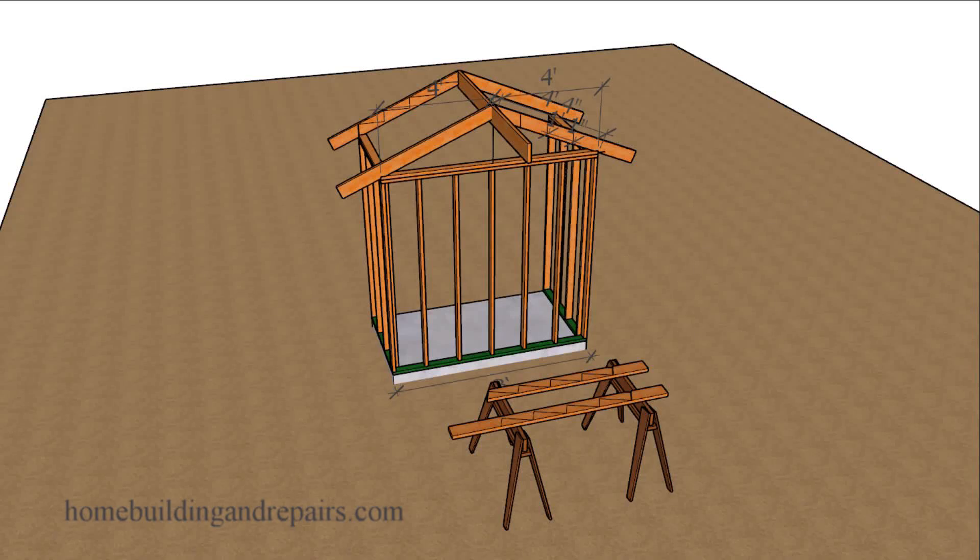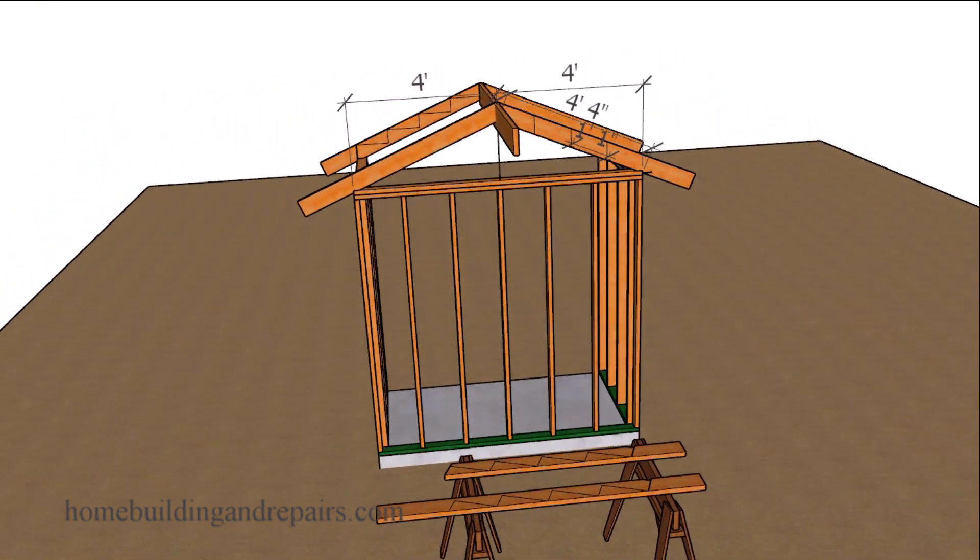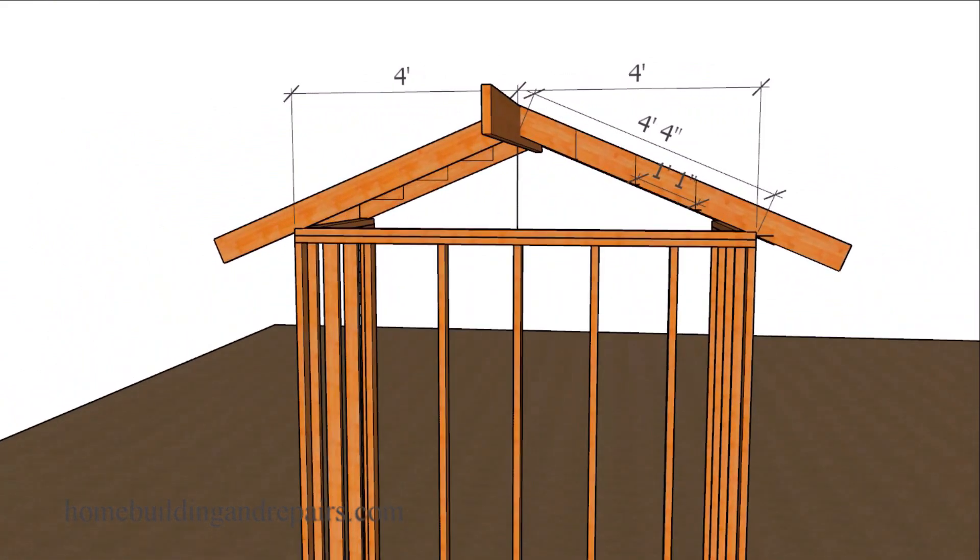Here is the second video in our rafter step-off method where we are going to use a framing square to lay out increments to create a roof rafter. I would definitely recommend watching part one. I will put a link in the video description box to that.